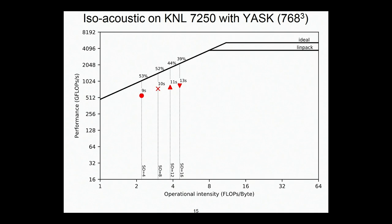And we're getting between 39 and 43% of peak. For all of these other operations, we haven't had to change the code. We just change a single number, and it generates the appropriate code.